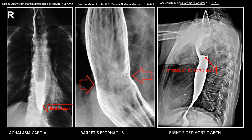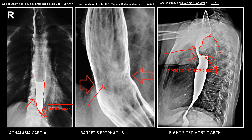These are several pathologies identified by the barium swallow technique. In the first image, the lower part of the esophagus shows a bird-beak appearance, also known as rat-tail appearance — this is the condition known as achalasia cardia. In the second image, we can see the dilated gastroesophageal junction; this condition is known as Barrett's esophagus. In the third image, we can see a constricted part of the esophagus due to a right aortic arch.